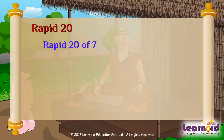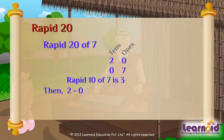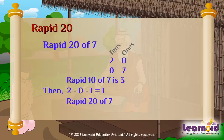Rapid 20 of 7. First, find rapid 10 of 7, which is 3. Then 2 minus 0 minus 1 equals 1. So rapid 20 of 7 is 13.